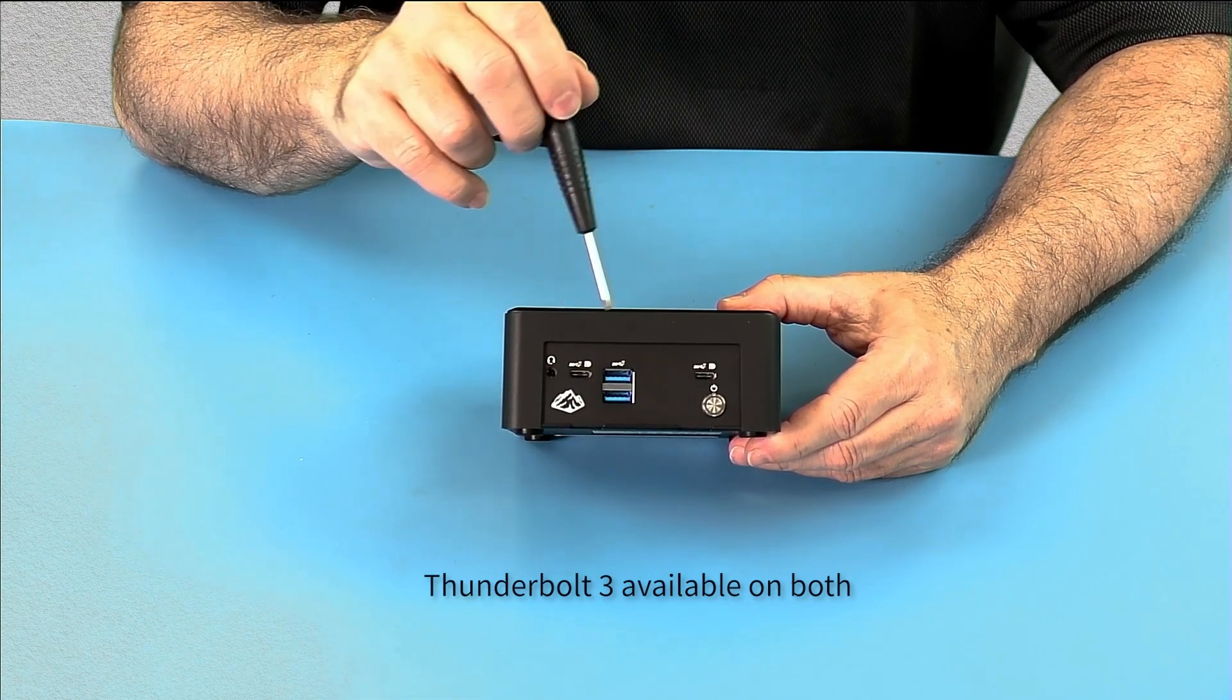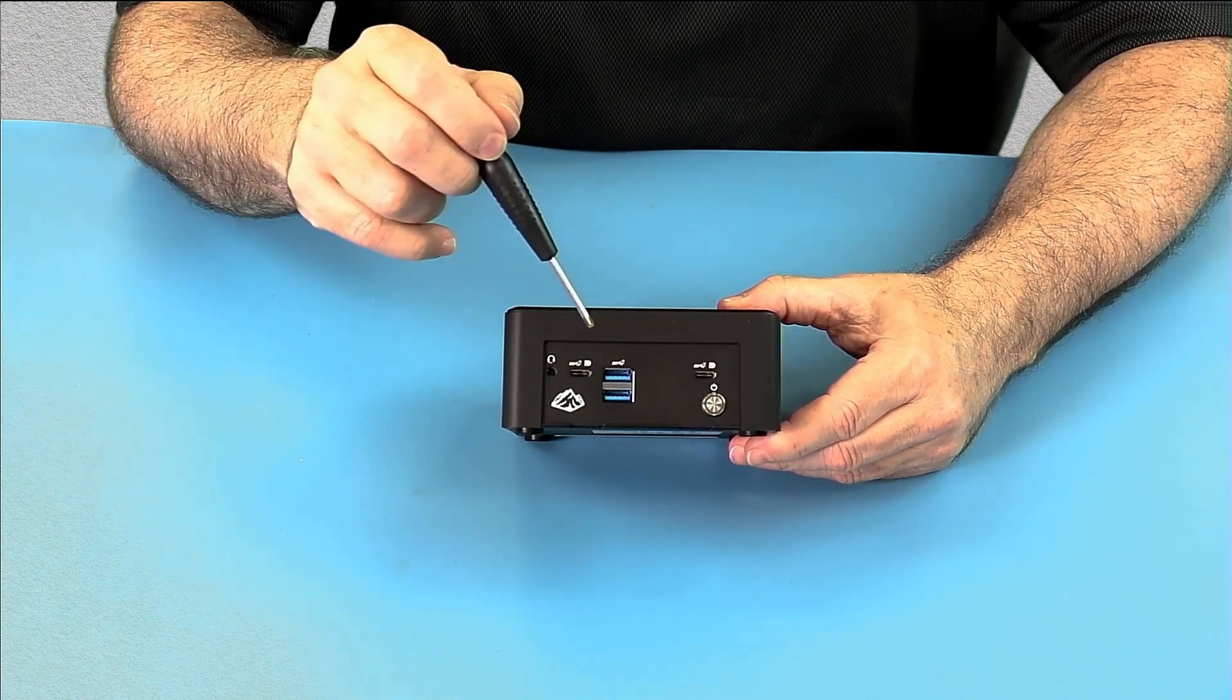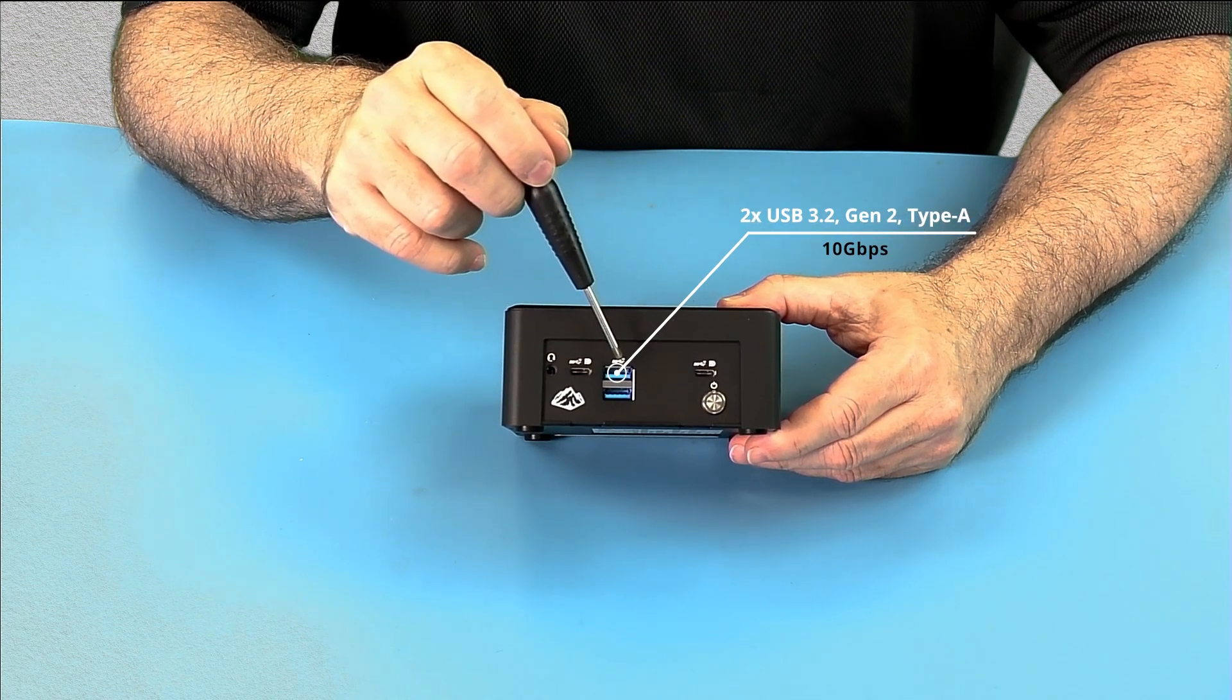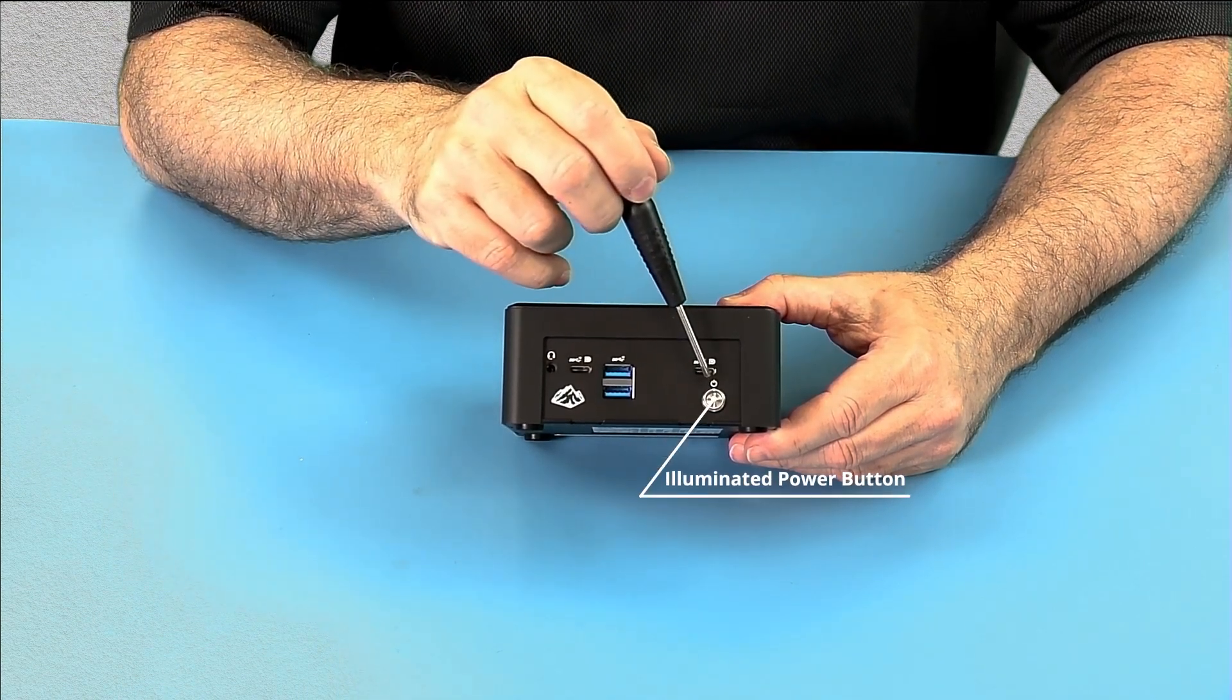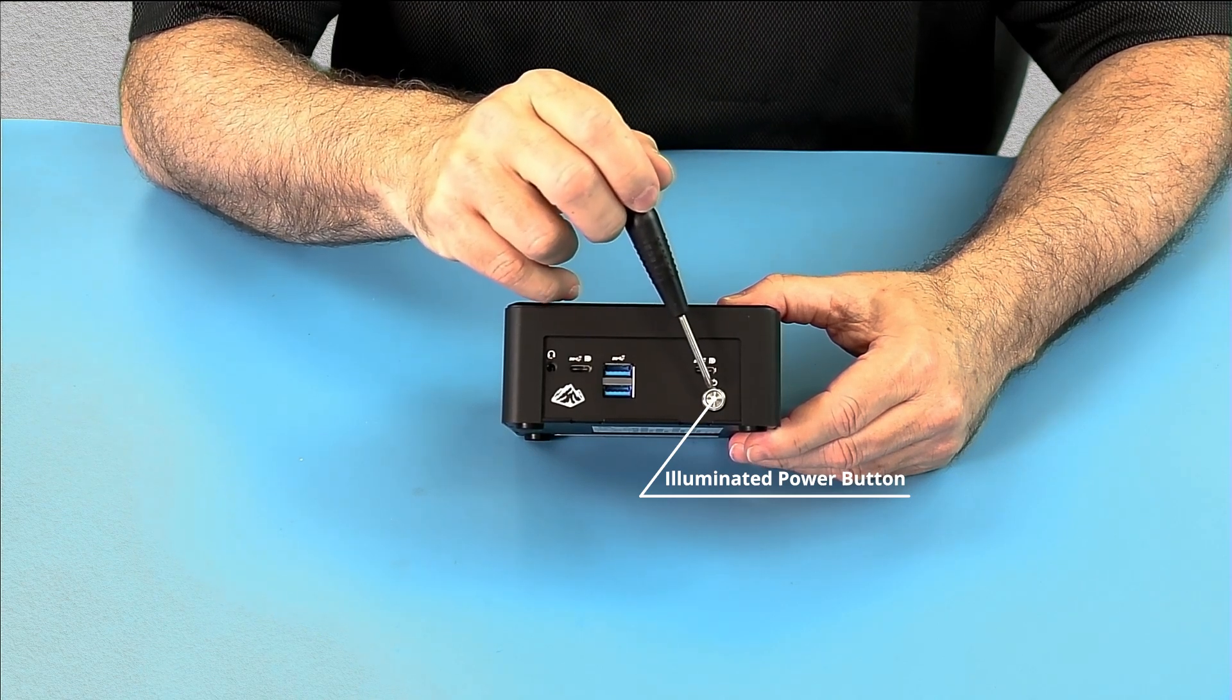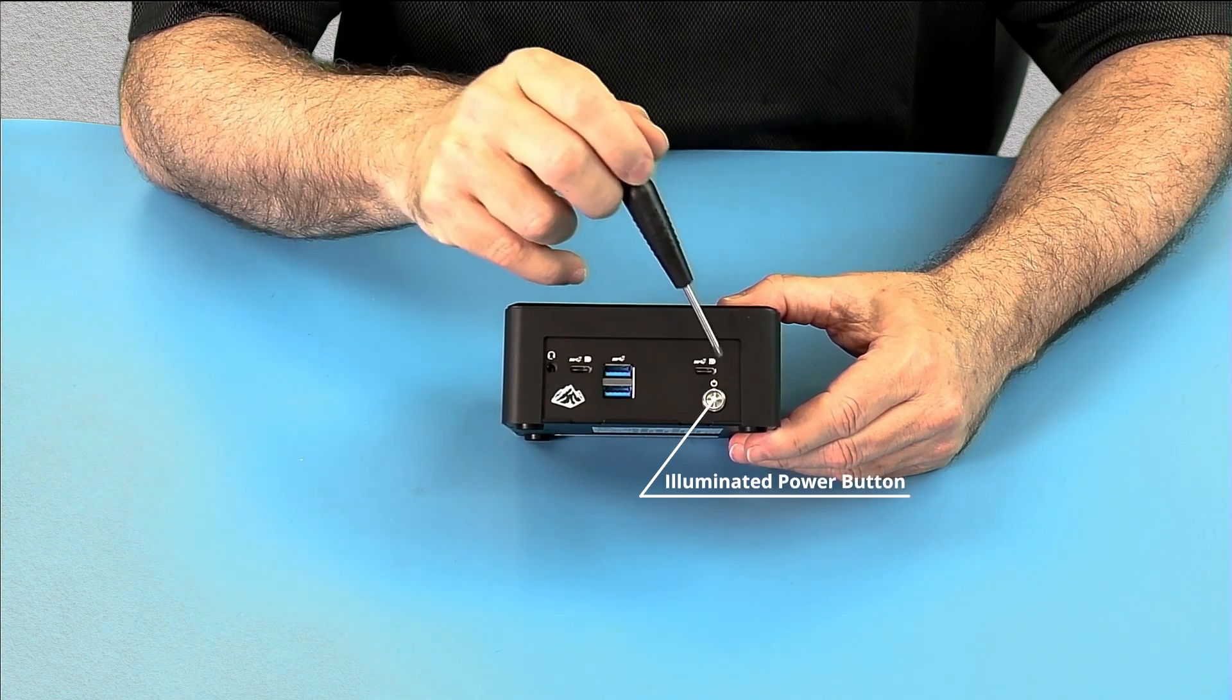You can see our two USB Type-A ports and these are also USB 3.2 Gen 2, 10 gigabit. And we have our illuminated power button. This button will have a ring lit up when the unit's on and it will be blinking when it's in standby, obviously off when it's off.